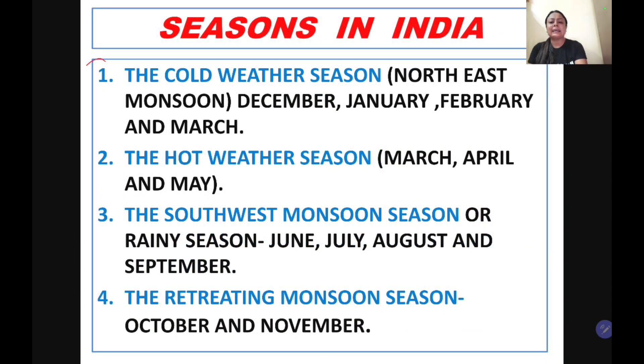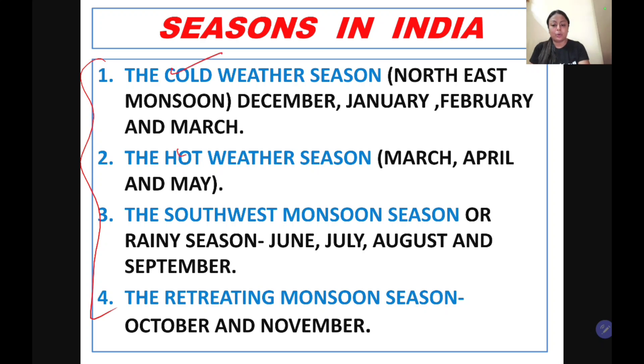India basically has four different seasons: the cold weather season, the hot weather season, the southwest monsoon season, and the retreating monsoon season.